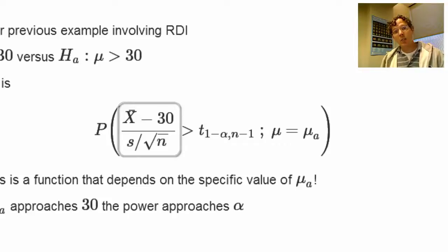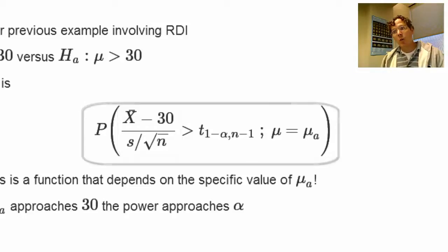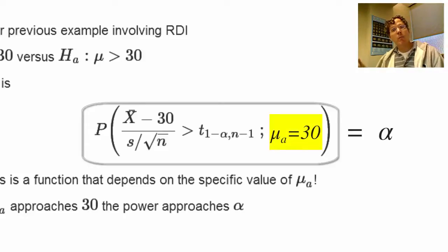That statistic, we're assuming, follows a t-distribution under the null hypothesis. So, if we calculate the probability that that statistic is bigger than the upper 1 minus alpha quantile of a t-distribution, that probability will be alpha if we calculate it under the null hypothesis when mu is 30. So, in this case, I would write that mu_A equals 30. Now, power is simply the same calculation, but instead of plugging in mu_A equal to 30, we plug in mu_A for some value greater than 30.